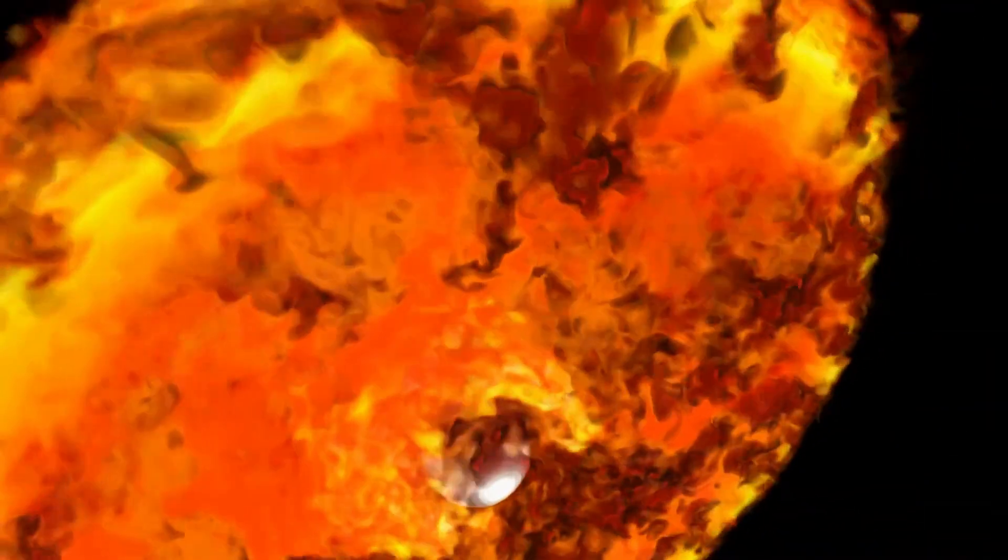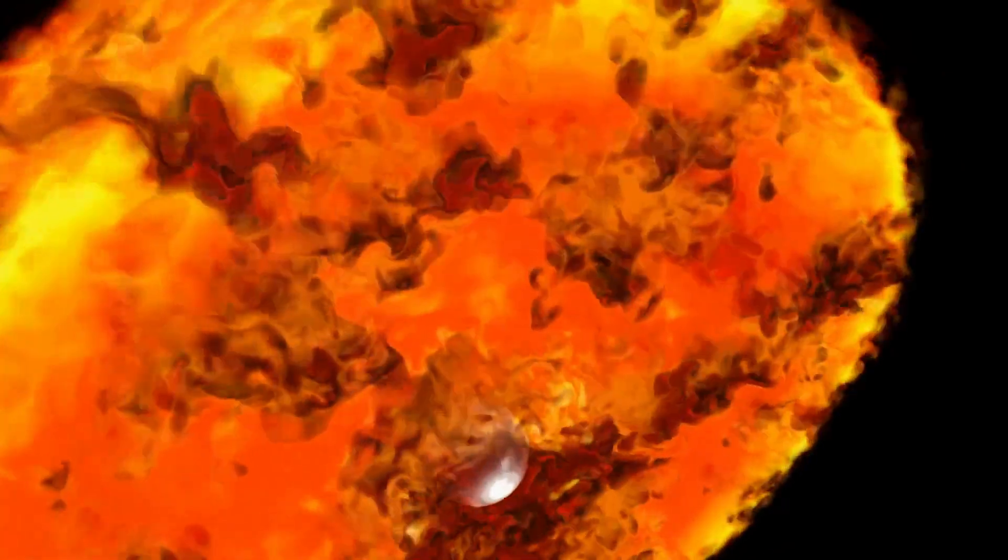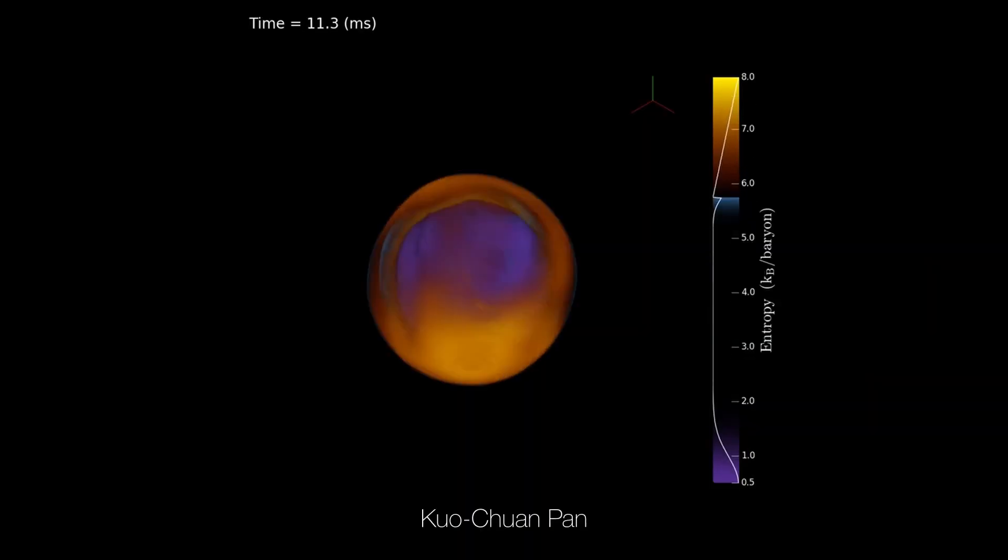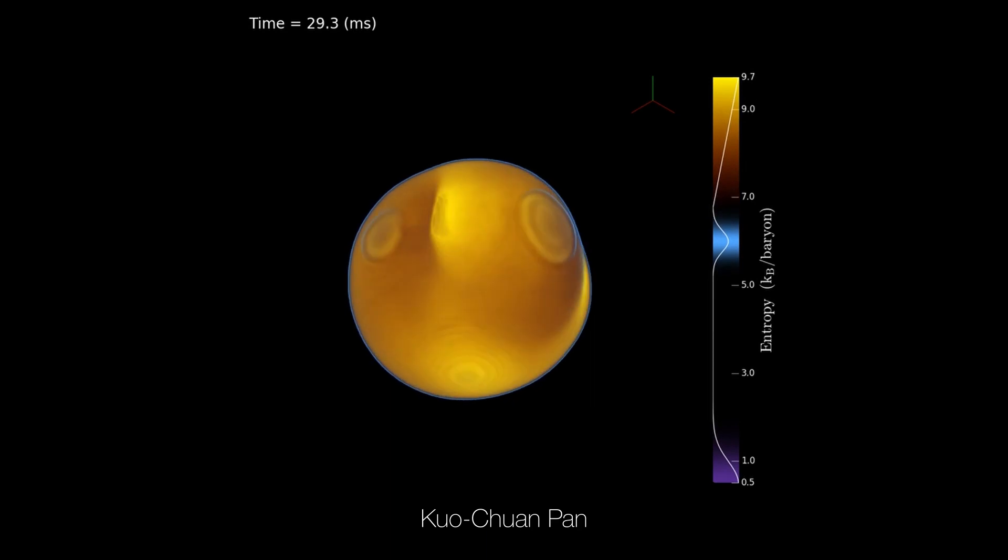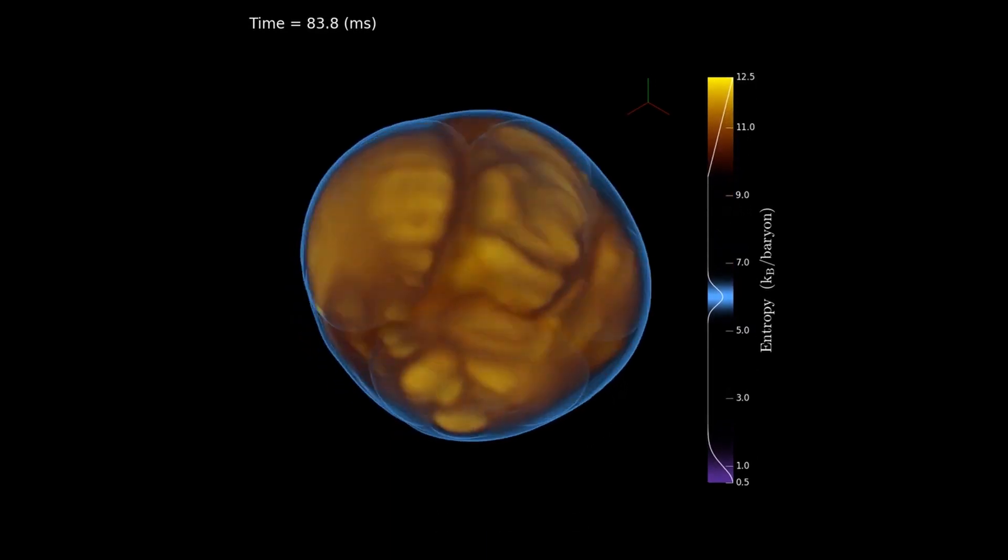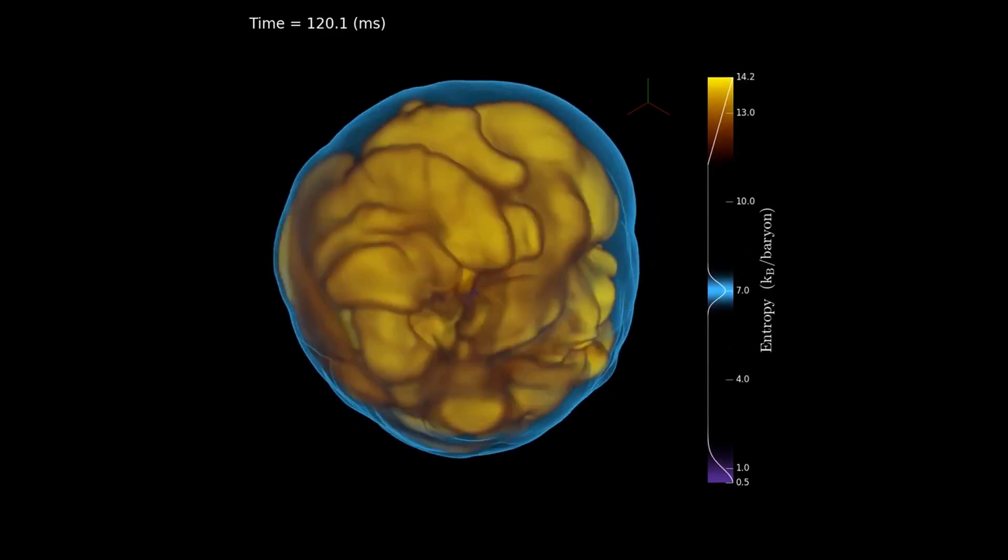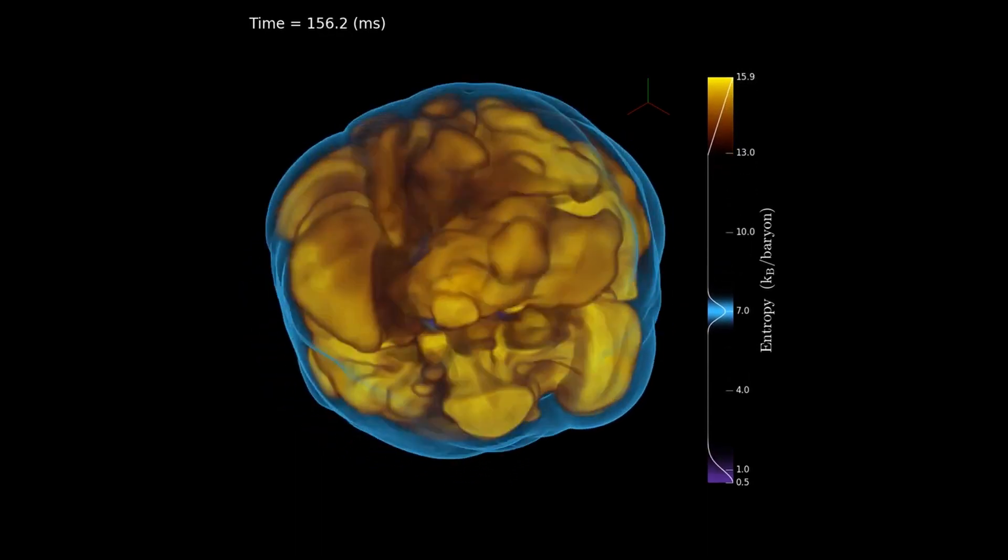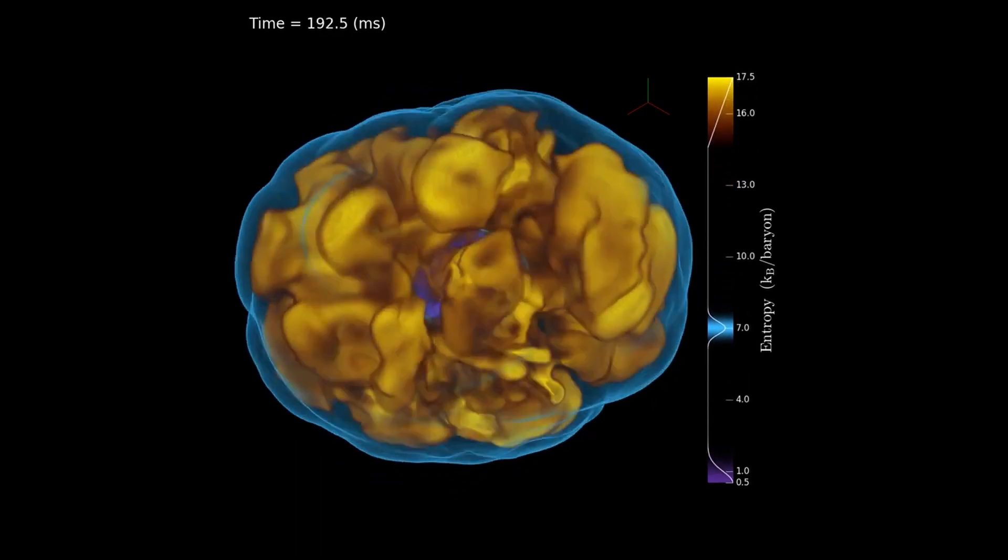Betelgeuse is currently in its final stages of life, and when its core begins to transform into iron, the star will only have a few minutes left. Without nuclear fusion to sustain it, Betelgeuse's core has no other option but to implode. The intense contraction causes it to heat up, become denser, and reach unprecedented pressure.